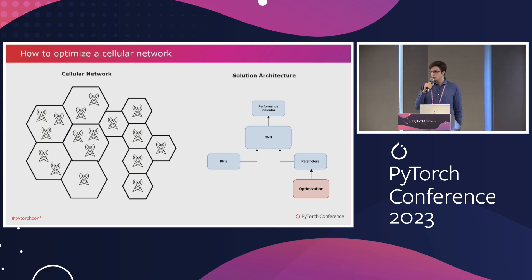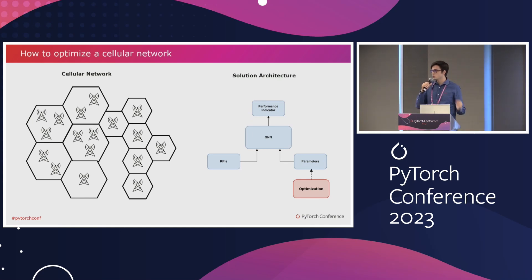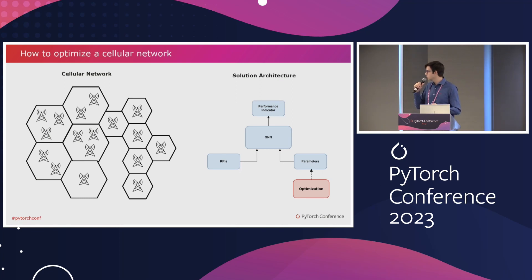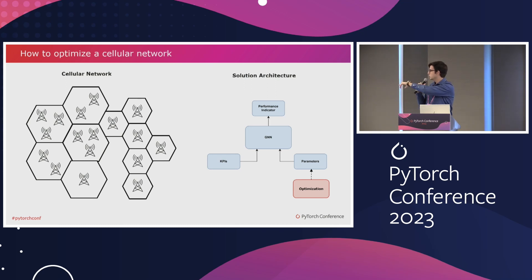The solution we are proposing is to do all the optimization offline. We try to build a really accurate model that represents the reality and then optimize the parameters with respect to that model. We find a performance indicator correlated with the problem, then we have a graph neural network model that also models the relation with the neighbors. As inputs we have fixed variables selected by radio experts — the KPIs — and the parameters we will change. Once we have trained the model, we start the second step: with any type of algorithm — iterative, genetic, or whatever — we change the parameters to try to improve the performance indicator predicted by the GNN.